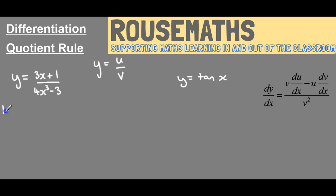So for this one here we're going to let u equal our numerator and we're going to let v be our denominator in our quotient and we're going to need to find du/dx and we're going to need to find dv/dx.